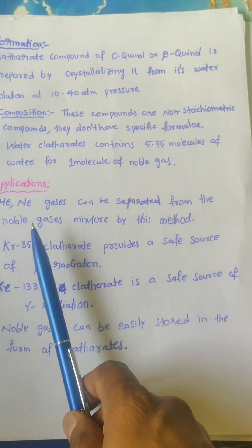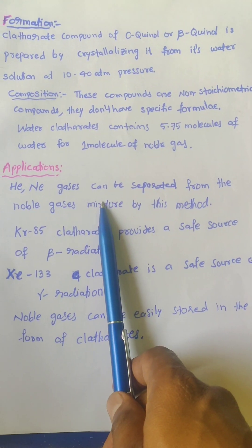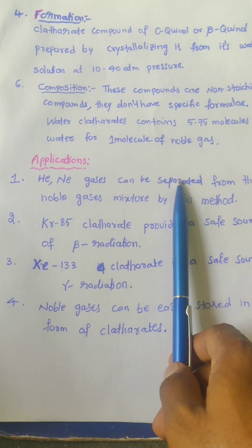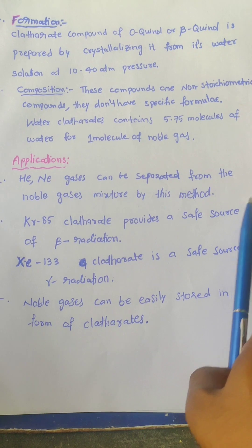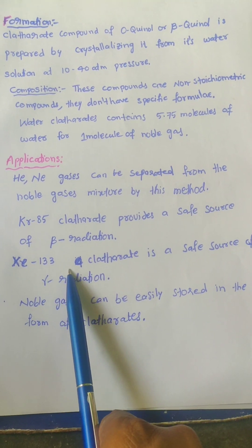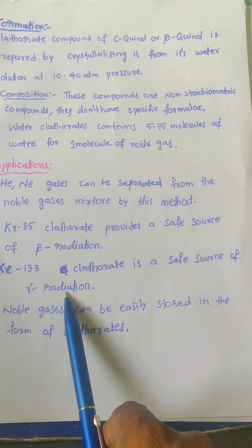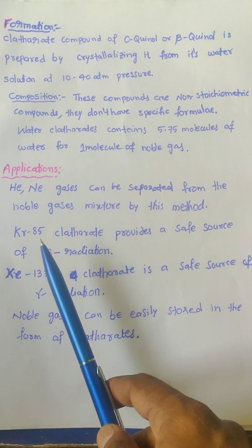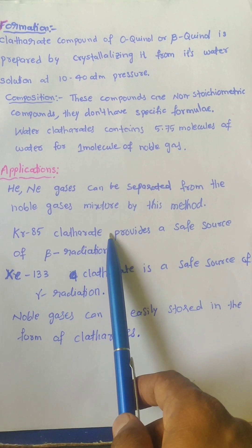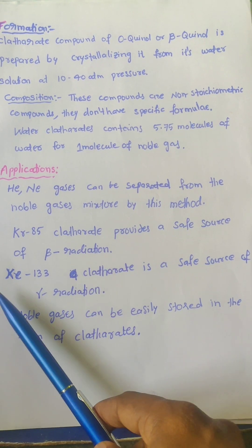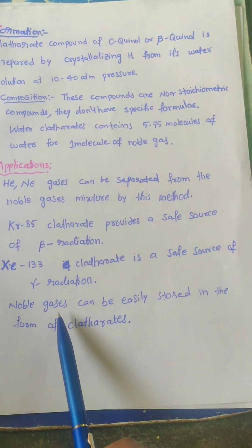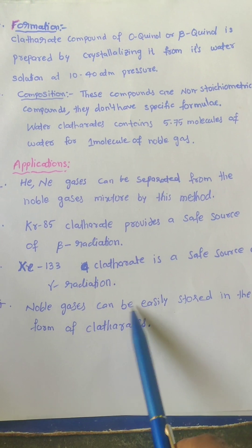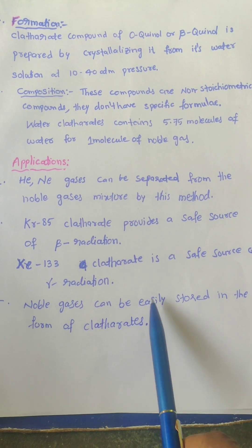Now we go for the applications. As helium and neon do not form clathrate compounds, they can be easily separated from a mixture of noble gases, which is one of the important applications. Krypton-85 clathrate is used as a source of beta radiation, and Xenon-133 is used as a source of gamma radiation. As they form clathrates, we can easily handle and use Krypton-85 and Xenon-133. Also, the ability of noble gases to form clathrate compounds can be used to store them for a long time.